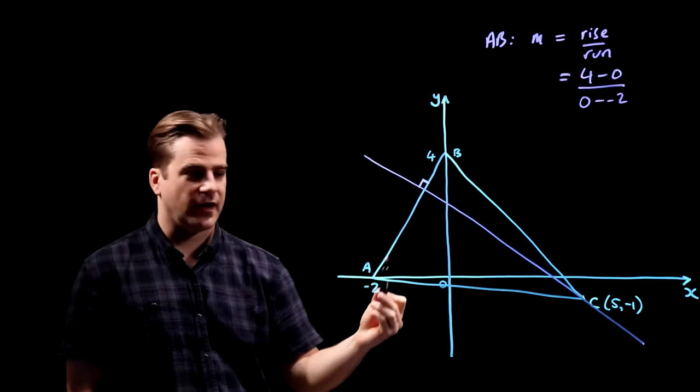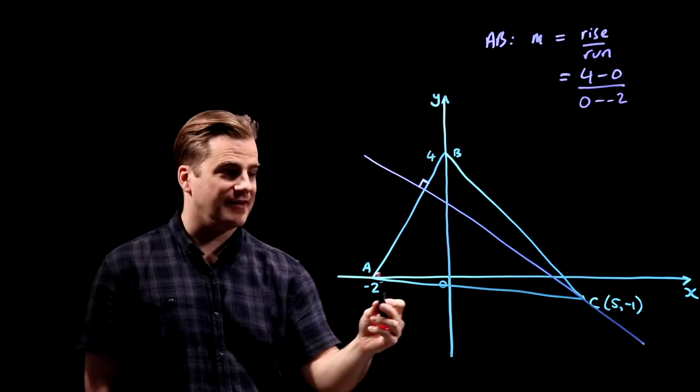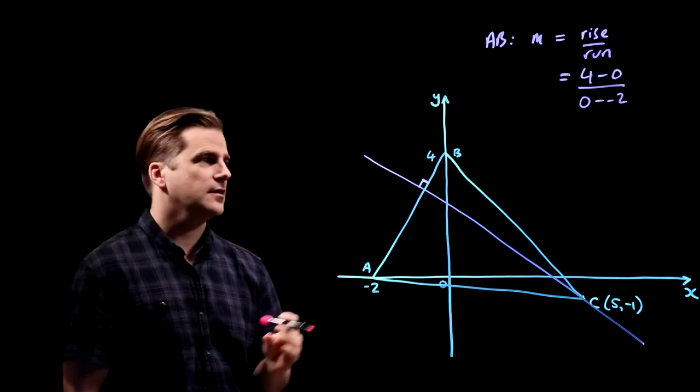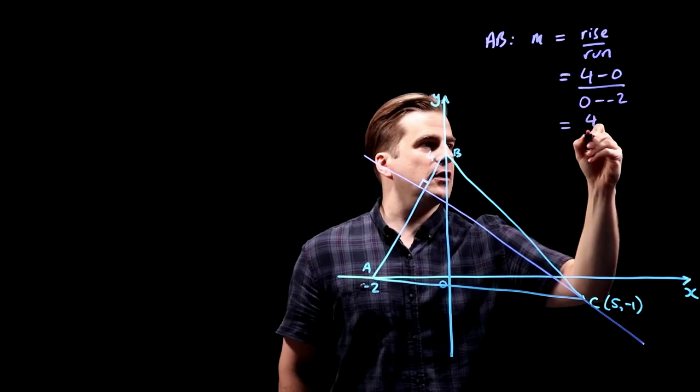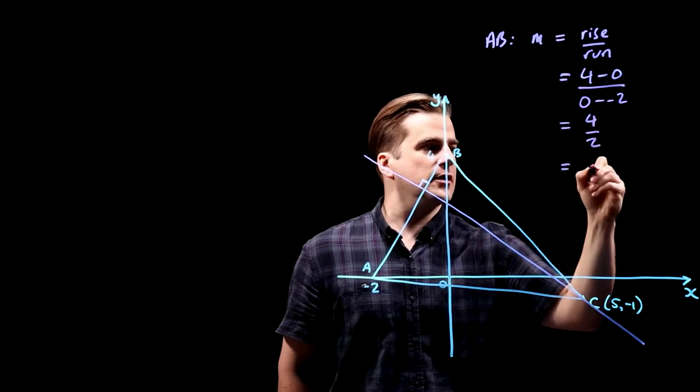Or just going, you can think of it like from minus two to zero is a distance of two. So that's four over two, which is two.